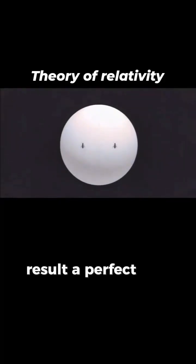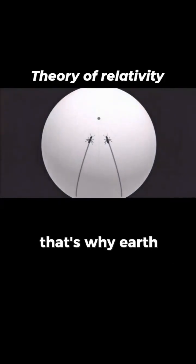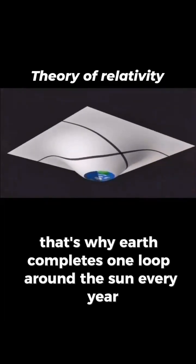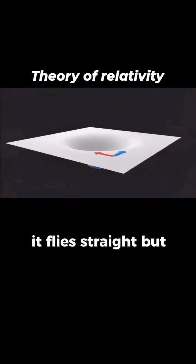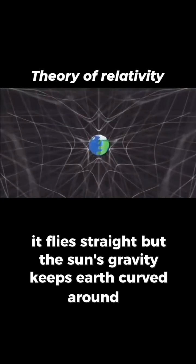Result? A perfect orbit. That's why Earth completes one loop around the sun every year. Imagine throwing a ball. If you throw it hard, it flies straight. But the sun's gravity keeps Earth curved around it.